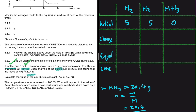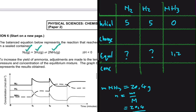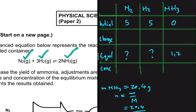Putting that in the calculator gives us 1.2, so the number of moles of NH₃ at equilibrium is 1.2. Using the balancing coefficients from the equation, the number of moles of nitrogen gas will decrease by minus x, and hydrogen gas will decrease by minus 3x. The balancing coefficient of hydrogen gas is 3. Ammonia, on the other hand, is increasing by plus 2x, since its balancing coefficient is 2.